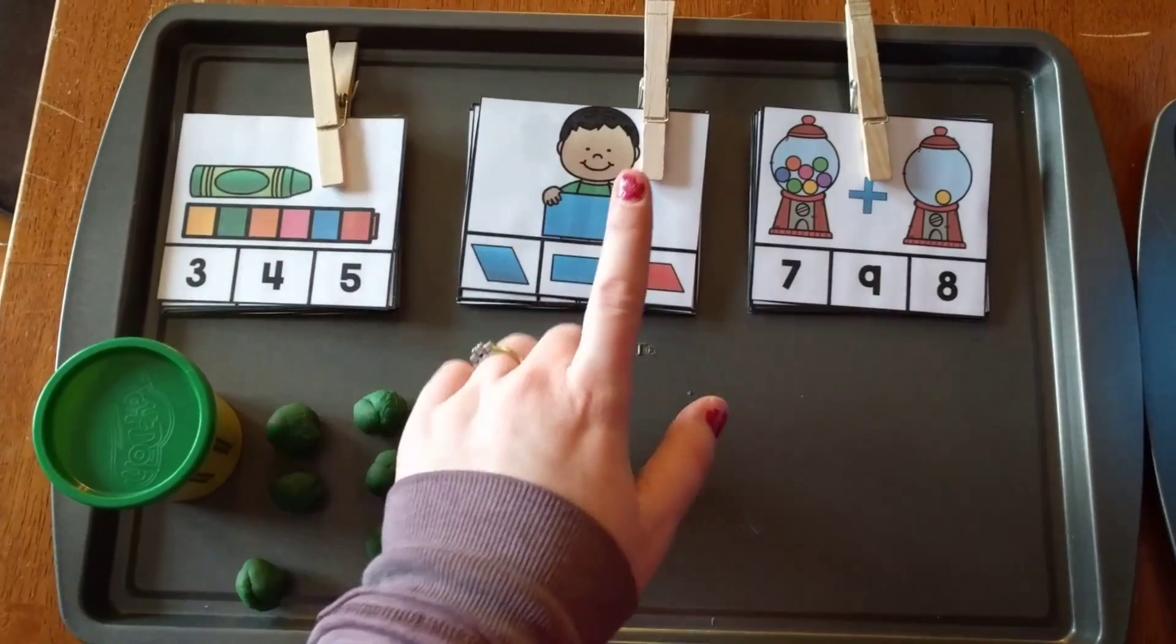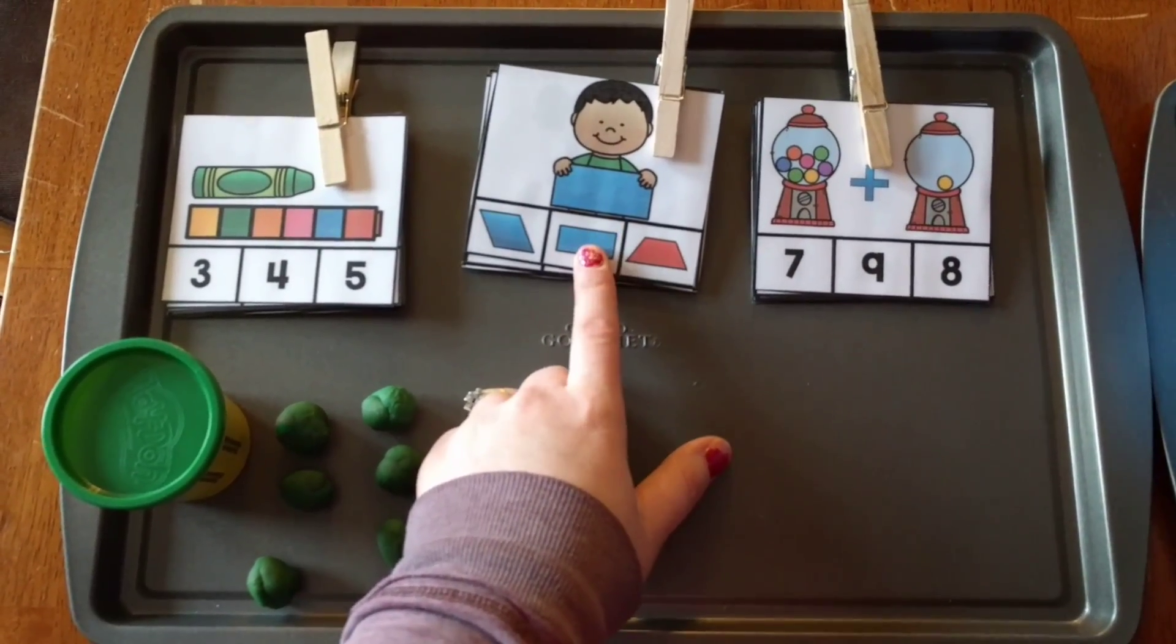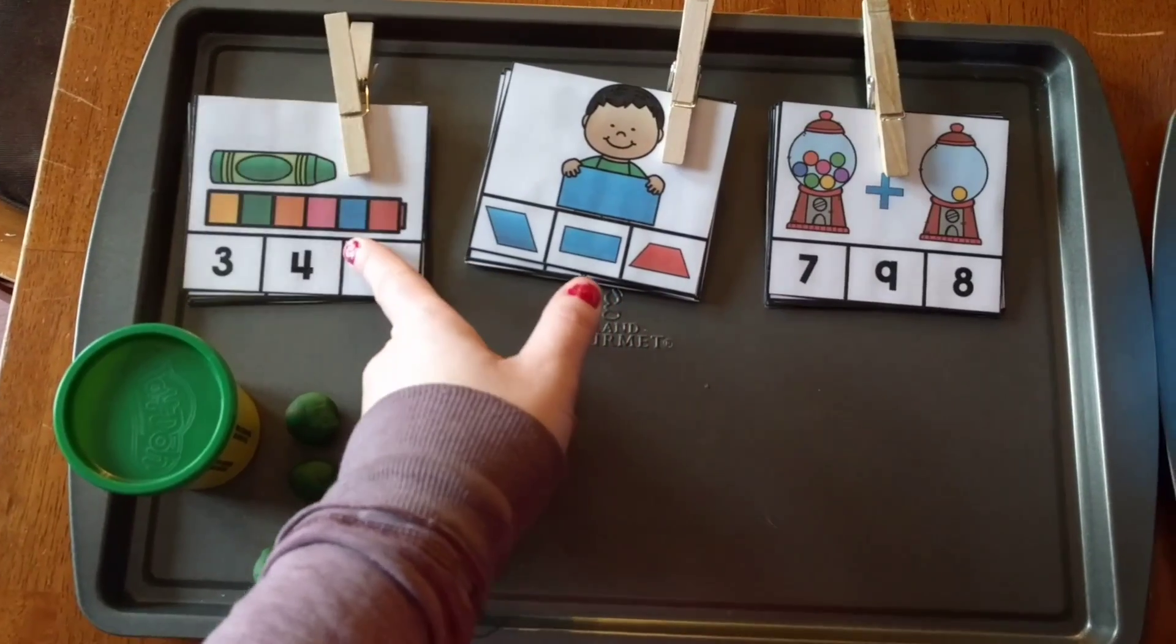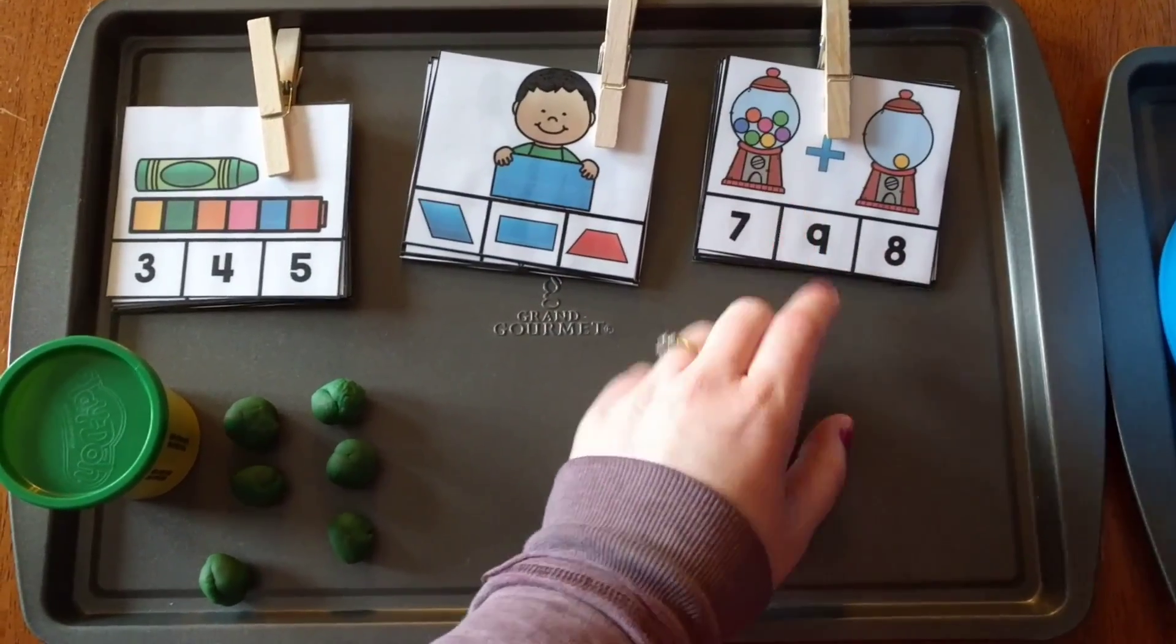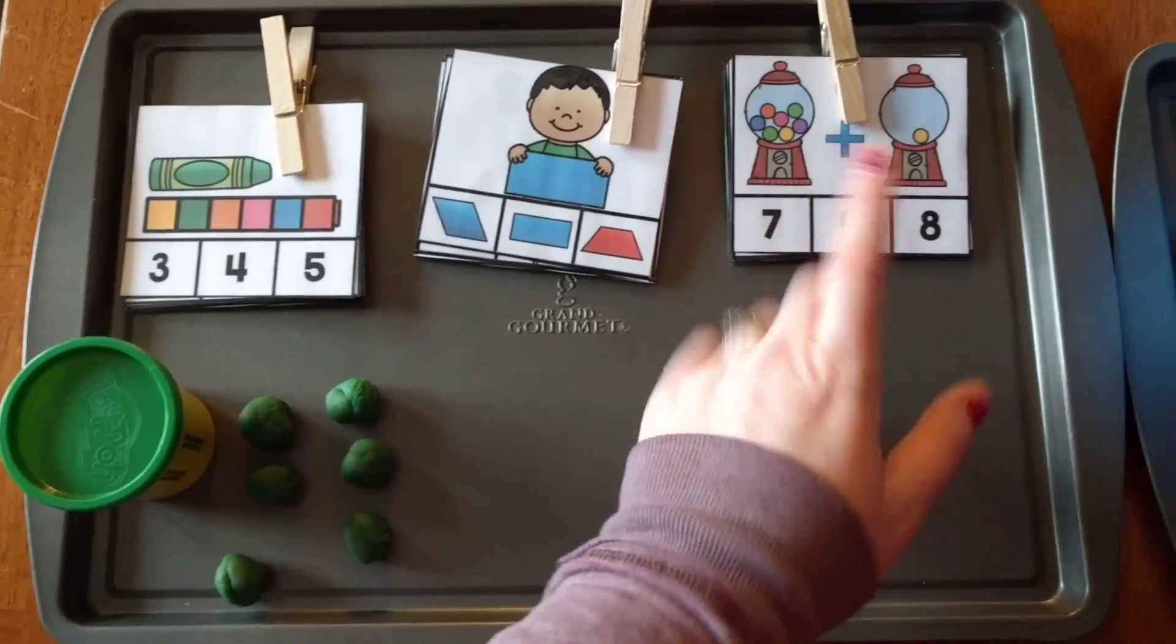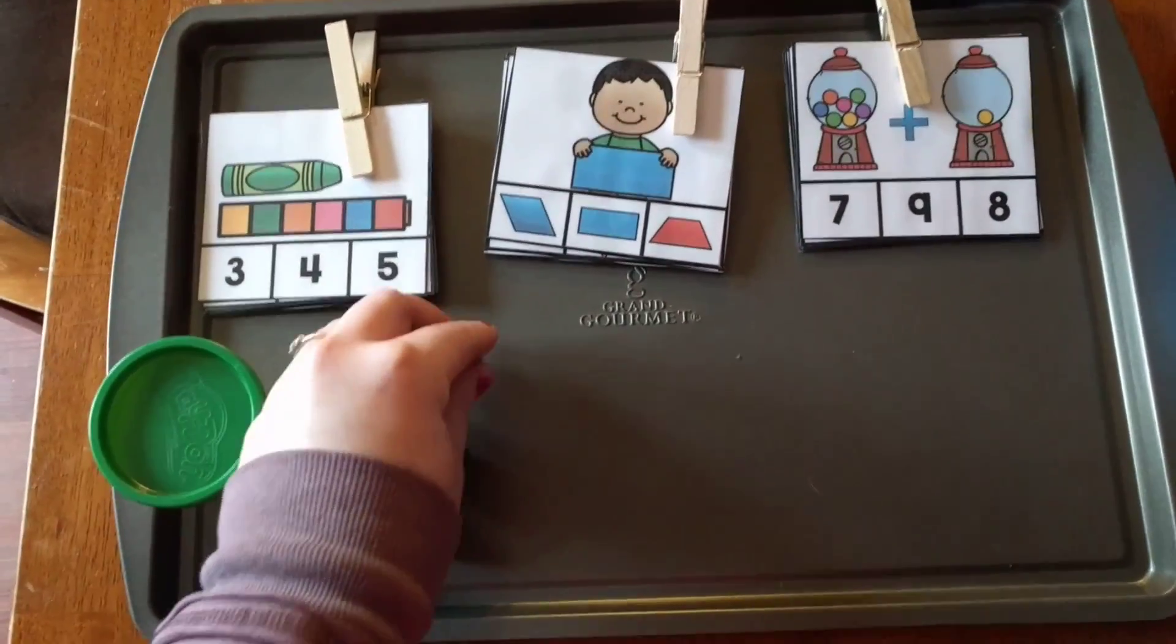So the shapes one I will probably be able to do with my preschooler and my kindergartner, and maybe even the measurement one my preschooler might be able to do, but my kindergartner will be the one to do the addition because my preschooler just turned three. He's not there yet, but let me show you how these work.